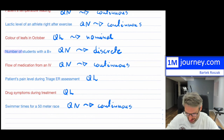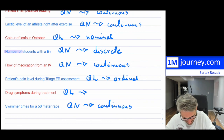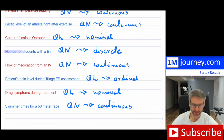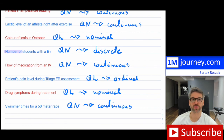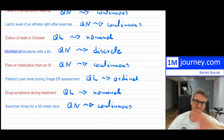Patient's pain level is ordinal. Drug symptoms are nominal. You can have many more examples like these. The key differences are: quantitative vs. qualitative, and then within those, continuous vs. discrete, and ordinal vs. nominal. Thanks for watching — see you in a future video.